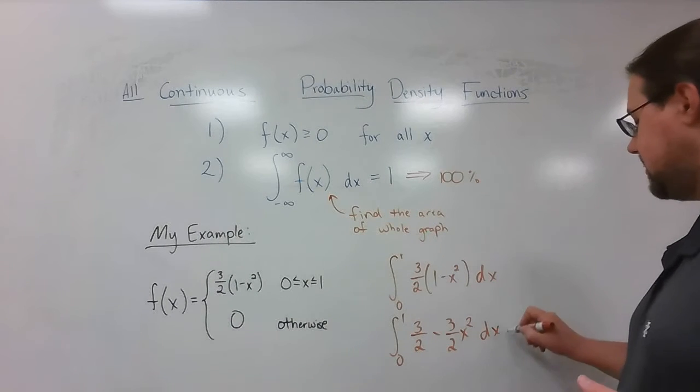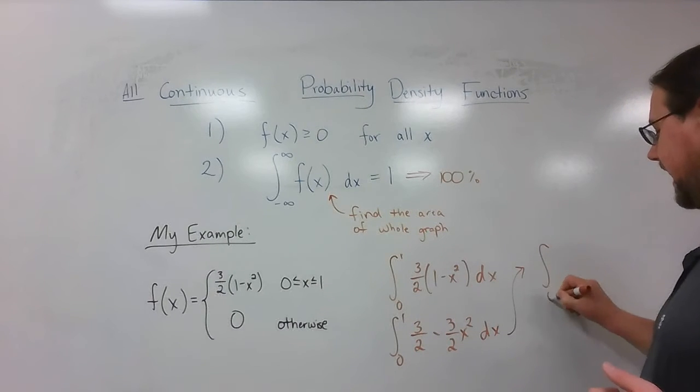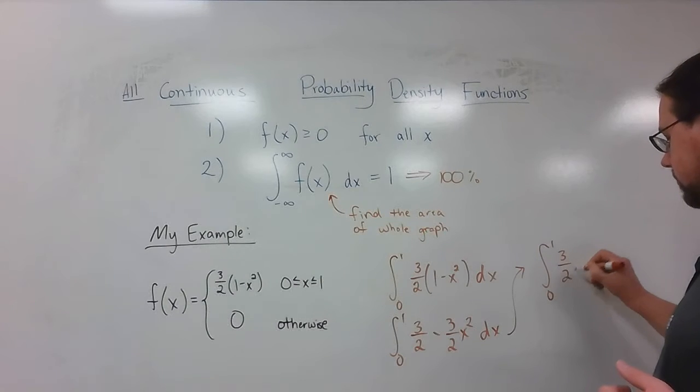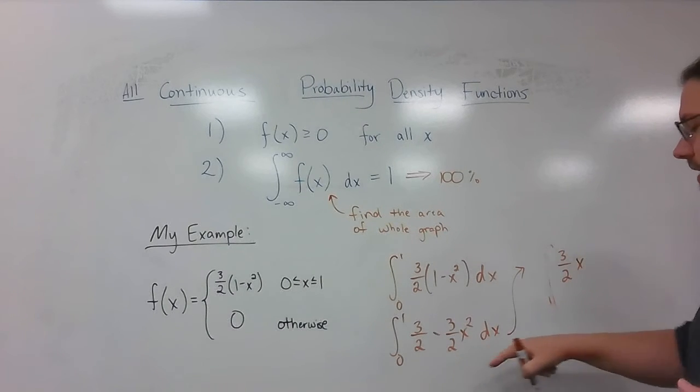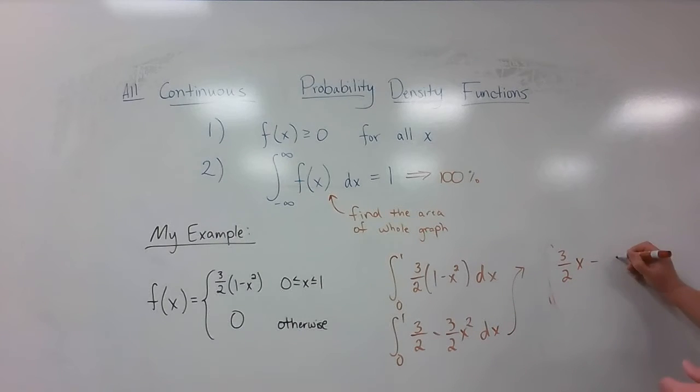So that's a constant. So it's just going to get an x. That's got 3 over 2 x squared. So I'm going to kick it up to an x cubed. I'm going to divide by 3, which makes it 1 half. And I'm going to evaluate that from 0 to 1.